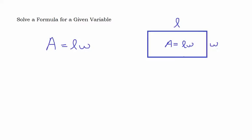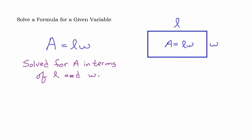How many variables are in this formula? Hopefully you'd say three. We've got A for area, L for length, and W for width. Right now this formula is solved for A in terms of L and W. What that means is that A is by itself on one side of the equal sign. This is solved for area in terms of length and width. 'In terms of' refers to whatever variables are on the other side of the equal sign.